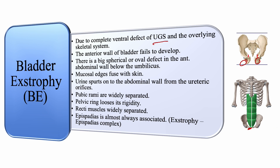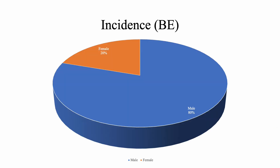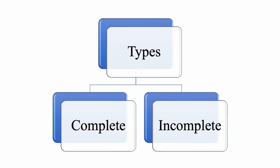Regarding incidence, bladder exstrophy is more common in males than in females, with a ratio of 80% male to 20% female — approximately 4:1. Bladder exstrophy or ectopia vesica is of two types: complete and incomplete.